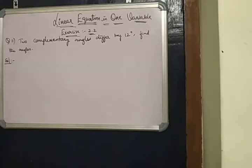Okay, hi everyone. In today's session we are going to discuss linear equations in one variable, exercise 2.2, question number 11. The question is: two complementary angles differ by 12 degrees, find the angles.